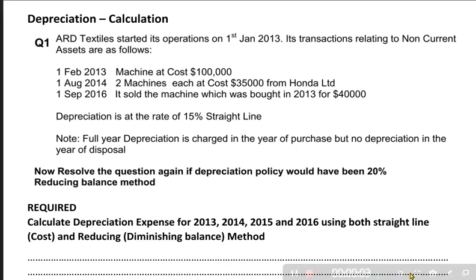The topic we are going to discuss today is depreciation. Whenever we buy a non-current asset and use it, there are numerous examples: buildings, machinery, furniture, equipment, computers. Any asset bought for use in the business with a life of more than one year is a non-current asset. Because of its use, the asset reduces in value.